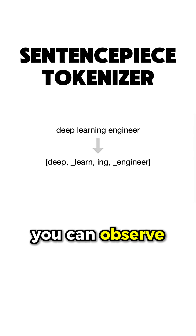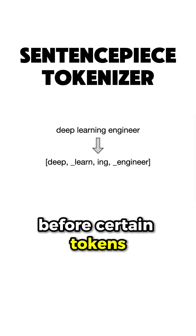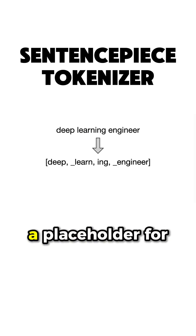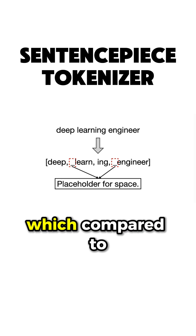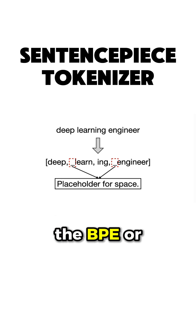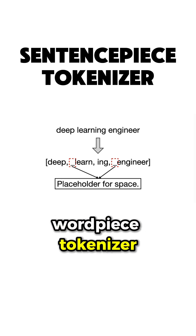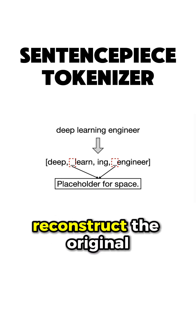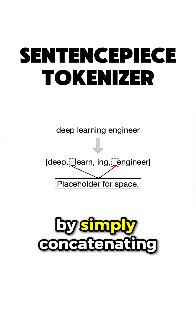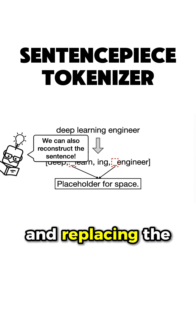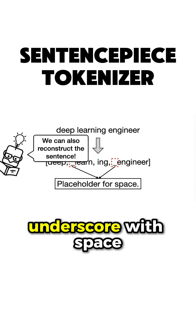You can assert that we have an underscore before certain tokens, which is simply a placeholder for the space, which, compared to the BPE or WordPiece tokenizer, allows us to reconstruct the original sentence by simply concatenating the tokens and replacing the underscore with a space.